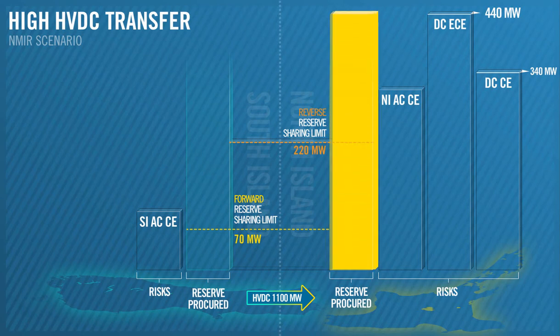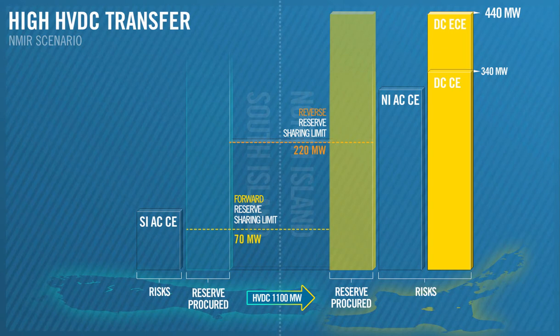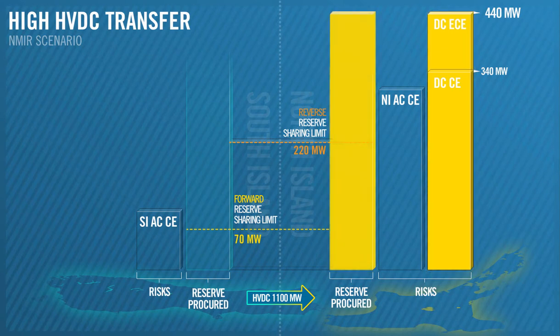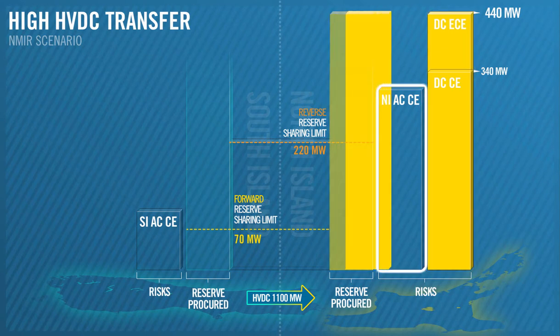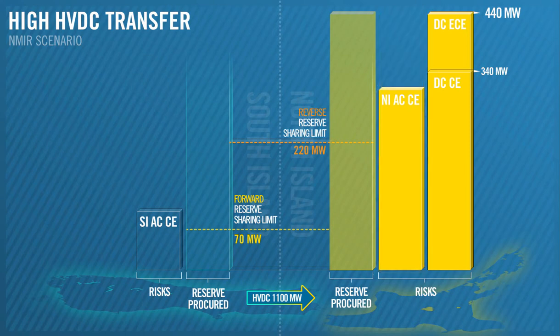Because we have procured enough reserve to cover the binding risk, which here is the DCECE risk, the AC risks are easily covered in this scenario. This applies to both FUR and SIR.